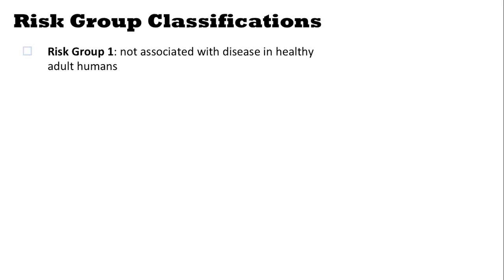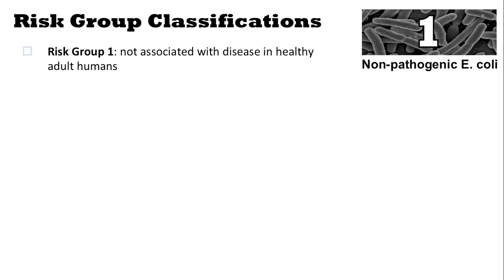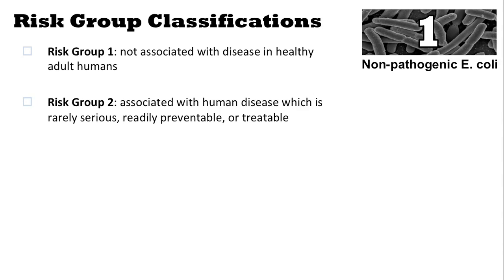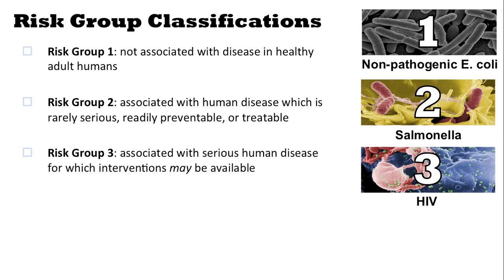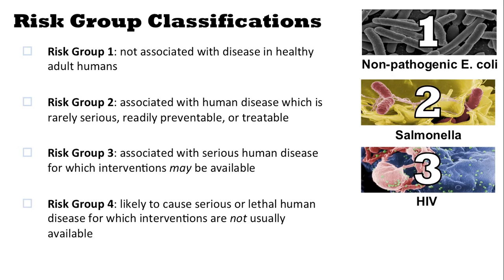After considering all of the factors, a particular agent will be given a risk group classification. Risk group 1 agents are not associated with disease in healthy adult humans — an example would be non-pathogenic E. coli. Risk group 2 agents are associated with human disease which is rarely serious, and is readily preventable or treatable — an example would be Salmonella. Risk group 3 agents are associated with serious human disease for which interventions may be available — for example, HIV. Lastly, risk group 4 agents are likely to cause serious or lethal human disease for which interventions are not usually available — an example would be Ebola.